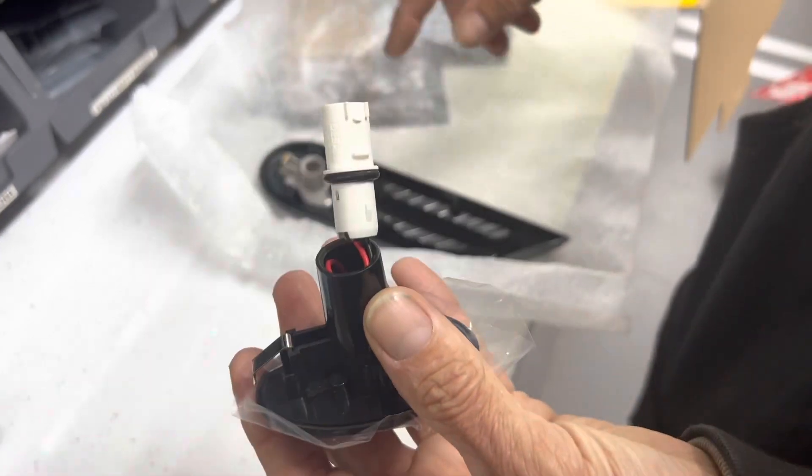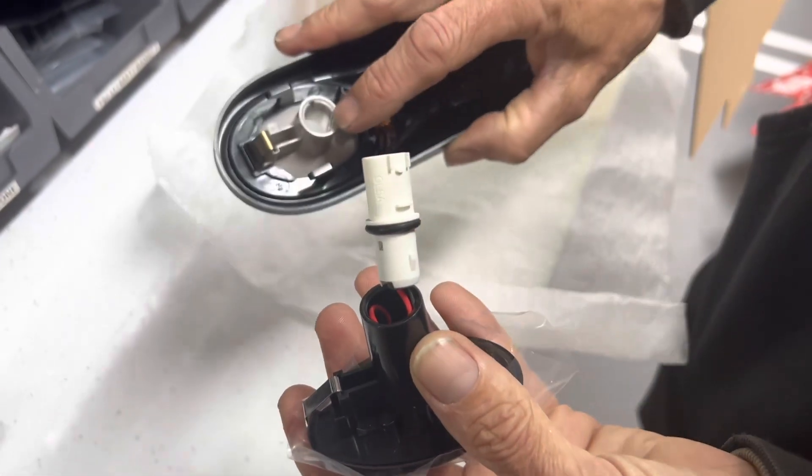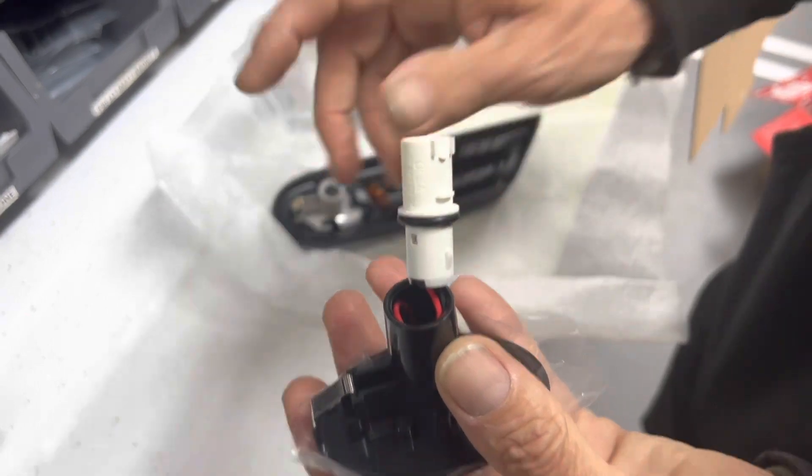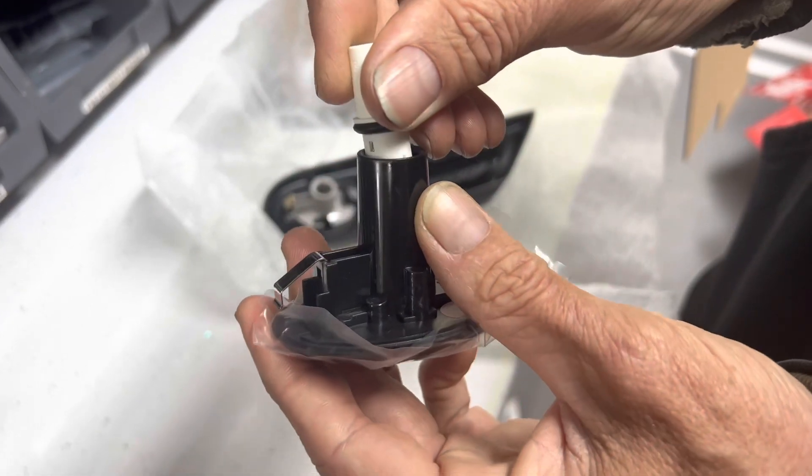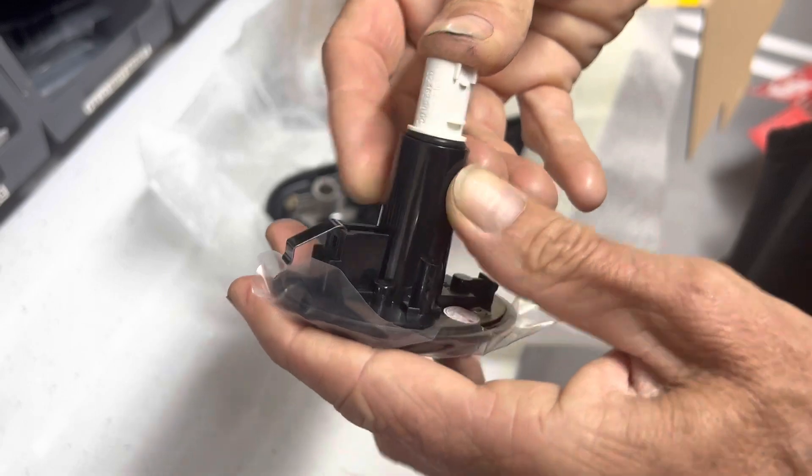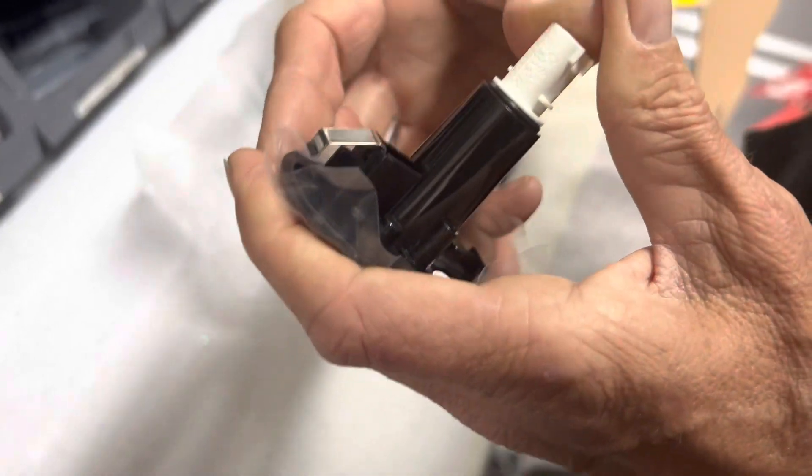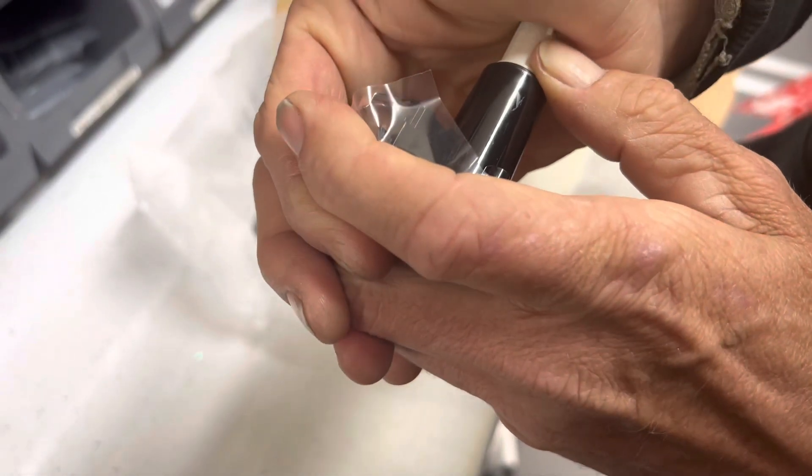Now on the old one they have a lock in them, as you can see there, whereas these ones are just basically a push-fit tube. So you've got to get that and push that inside.